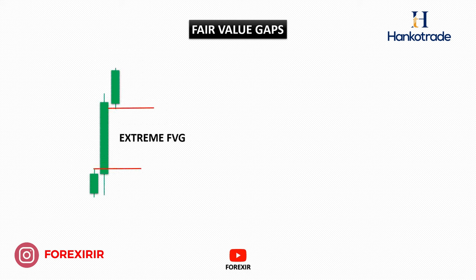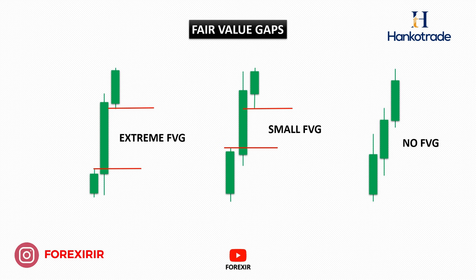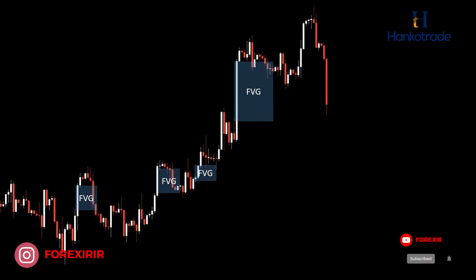How do we gauge the aggressiveness of a price movement? We achieve this by pinpointing fair value gaps on the chart. A fair value gap represents the space between the wicks of the first and last candle within a three-candle sequence. The size of the gap serves as a direct indicator of the movement's level of aggression — the larger the gap, the more pronounced the aggressive movement. The fair value gap serves as an indication of an imbalance between buyers and sellers, signifying a substantial influx of capital into the market. Usually, the price revisits these areas to fulfill the orders that were previously left unexecuted, thereby restoring a sense of equilibrium.